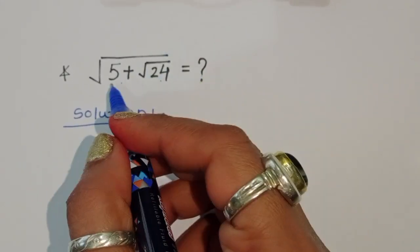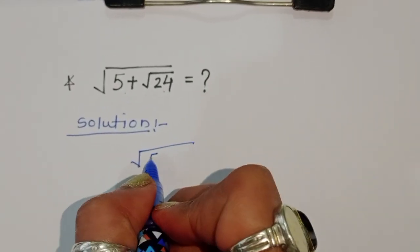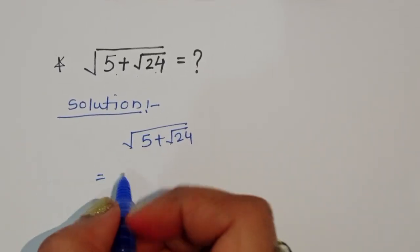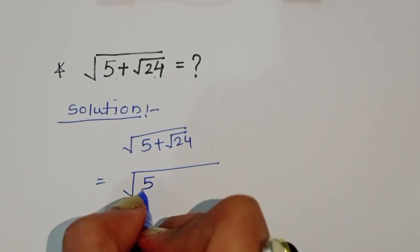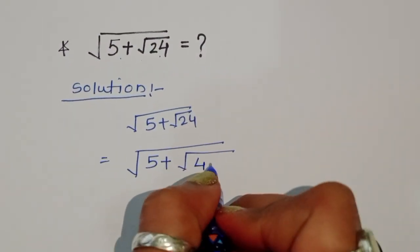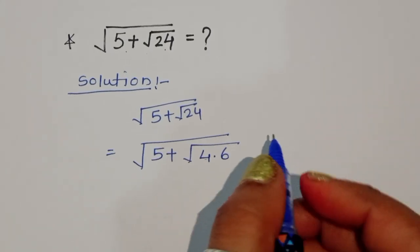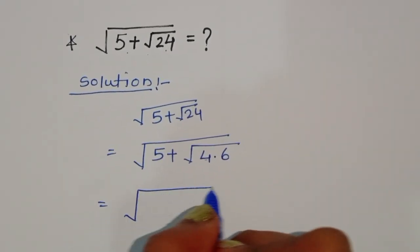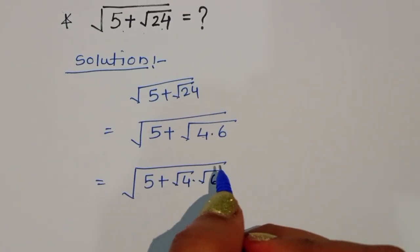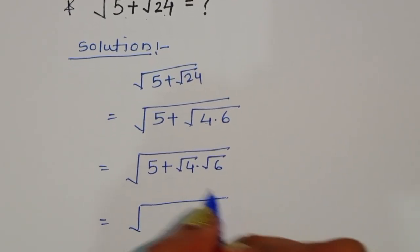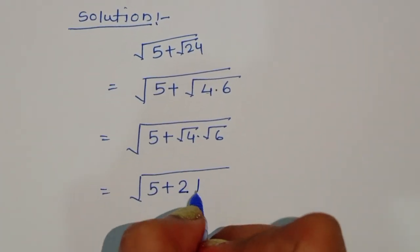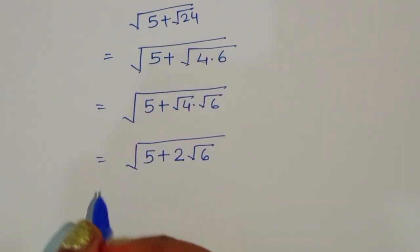It's a square root question, so let's start. Square root of 5 plus square root of 24. Now, 24 we can write as 4 times 6. So this becomes square root of 5 plus square root of 4 times square root of 6. The value of square root of 4 is 2, so we get square root of 5 plus 2 square root of 6.